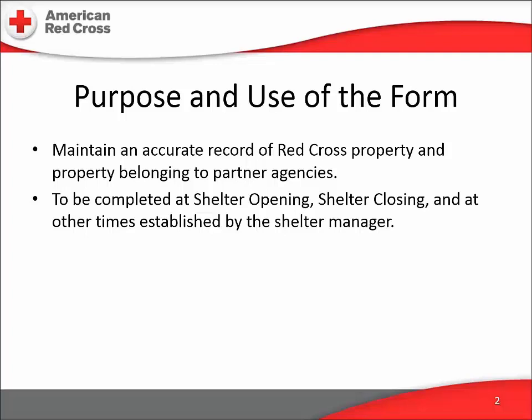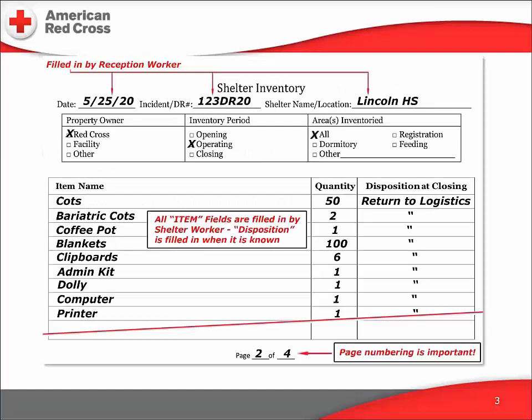We start when the shelter is opened and create the first one. We create a new one on a schedule set by the shelter manager — every two days, every week, whatever the DR needs. And we create a final one at shelter closing. The completed forms are turned in at headquarters by the shelter manager after the shelter closes.